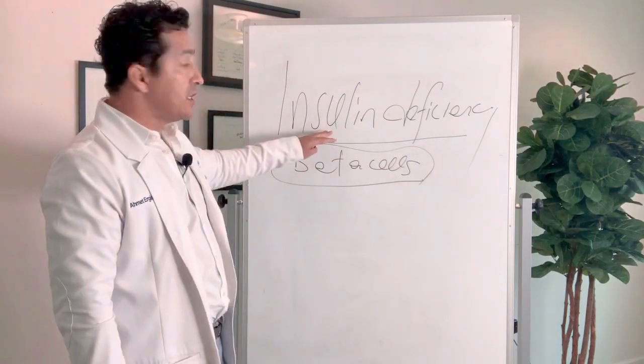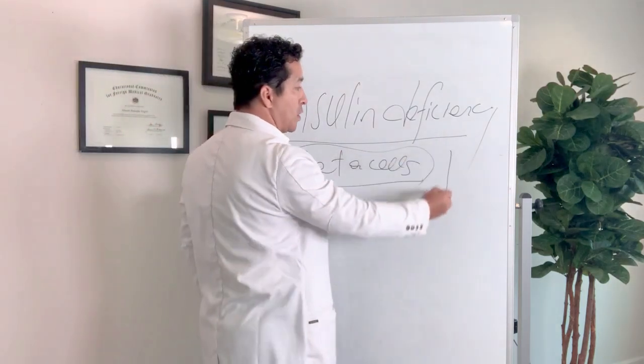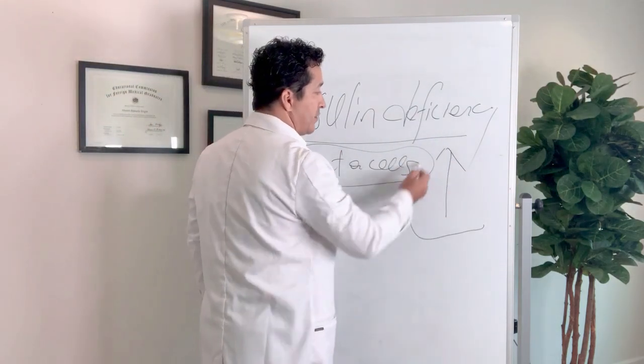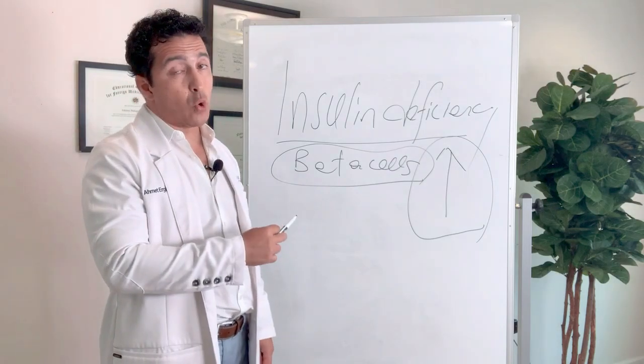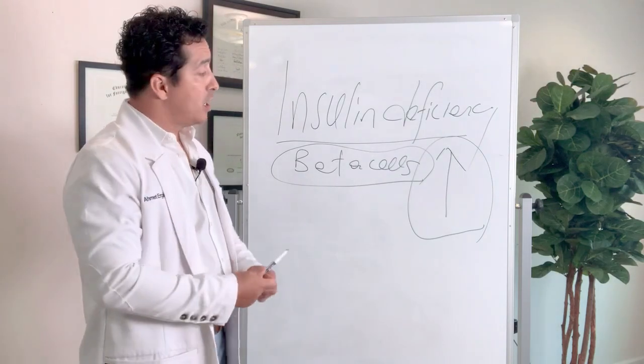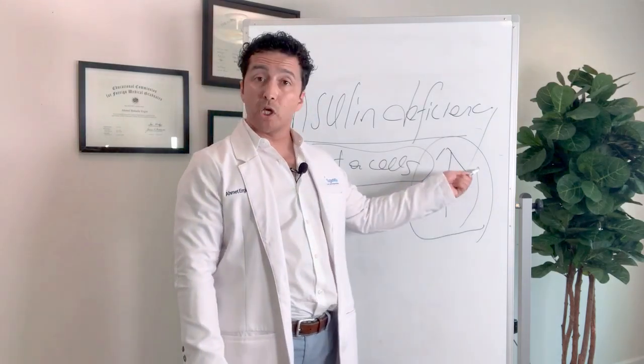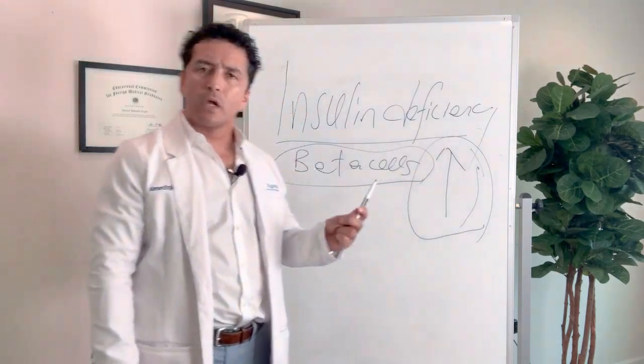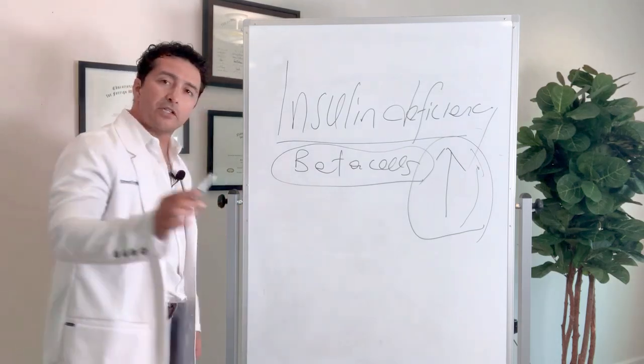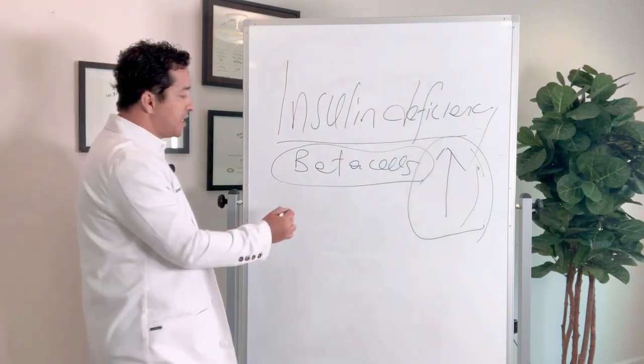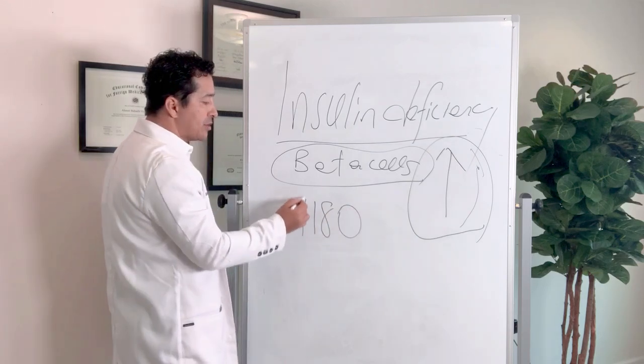If there is no insulin in your body, what happens? Your blood sugar goes up, correct? Very easy. You may have insulin in your body and your sugar may still go up if you're insulin resistant. But in this case, I'm talking about insulin deficiency only. Your blood sugar will go up. When your blood sugar goes up, your kidneys, in normal people, will start absorbing blood sugar anytime your blood sugar is about 180.